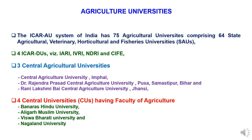Now to study agriculture universities and institutions. The ICAR Agricultural University system of India has 75 agriculture universities comprising 64 state agricultural, veterinary, horticultural, and fisheries universities. ICAR has four deemed universities: IARI — Indian Agricultural Research Institute; IVRI — Indian Veterinary Research Institute; NDRI — National Dairy Research Institute; and CIFE — Central Institute of Fisheries Education.